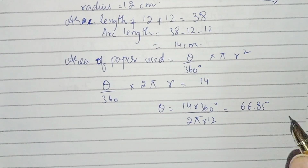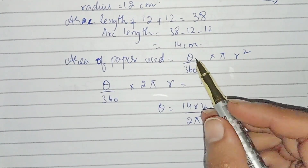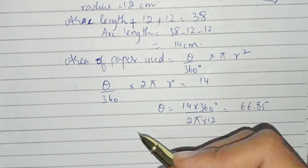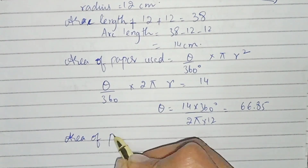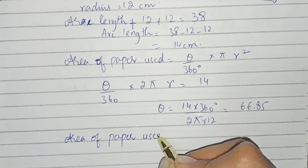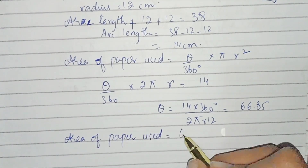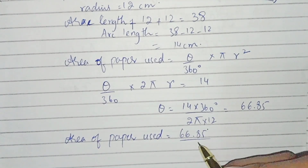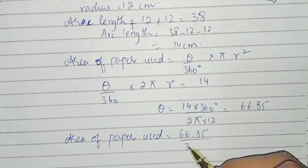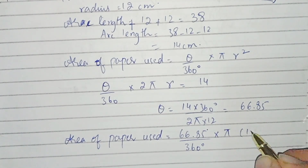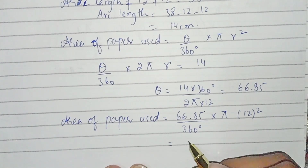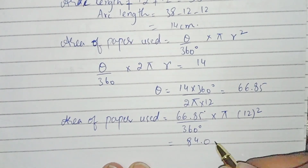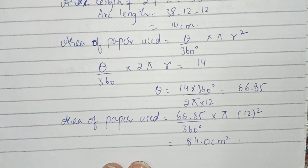Now we put the values into the area formula: θ = 66.85°, divided by 360°, multiplied by π, and r = 12². By calculating this we get the area of paper used as 84.0 centimeters squared.